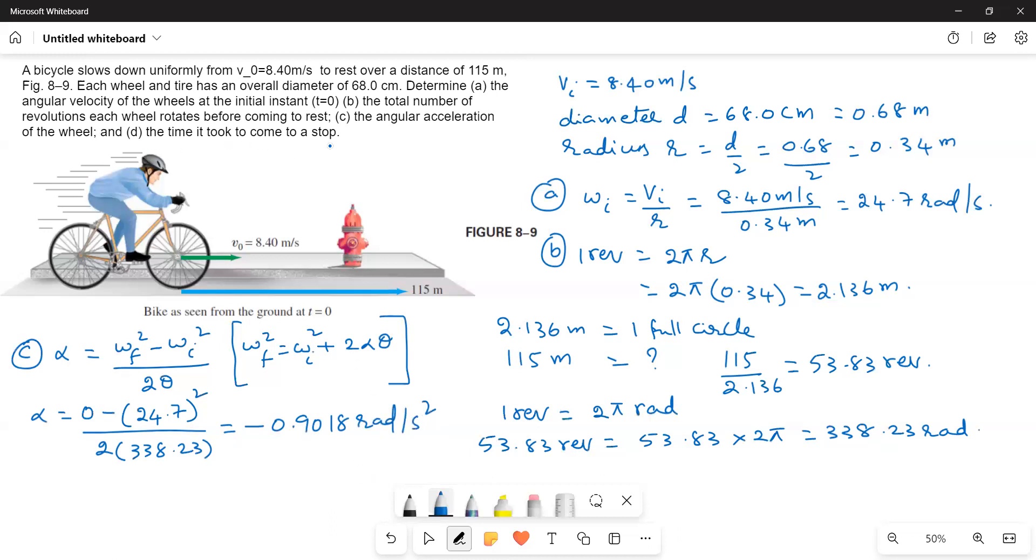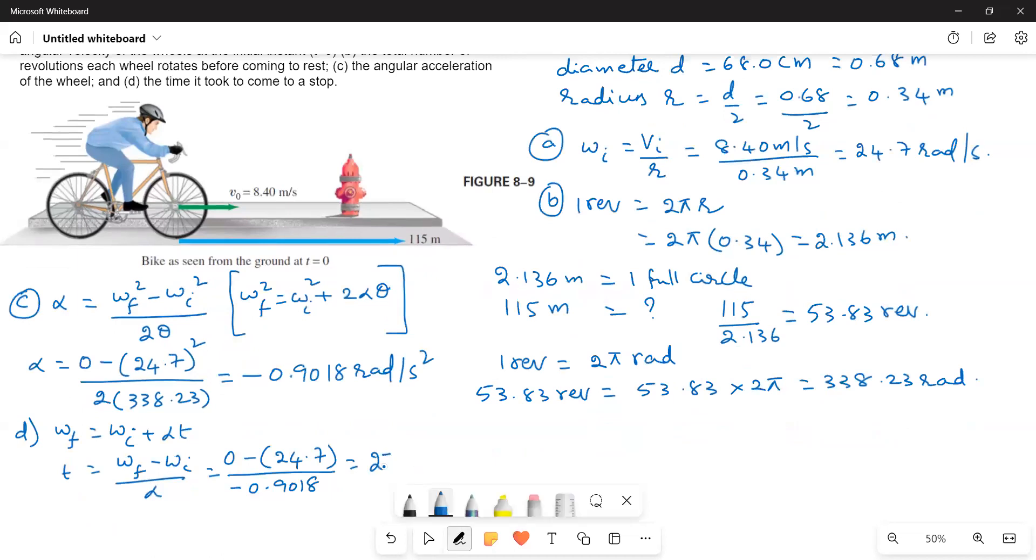Now the last part: the time it took to come to a stop. ωf = ωᵢ + αt. Therefore, t = (ωf - ωᵢ)/α = (0 - 24.7)/(-0.9018) = 27.38 seconds, or approximately 27 seconds. This is the answer.